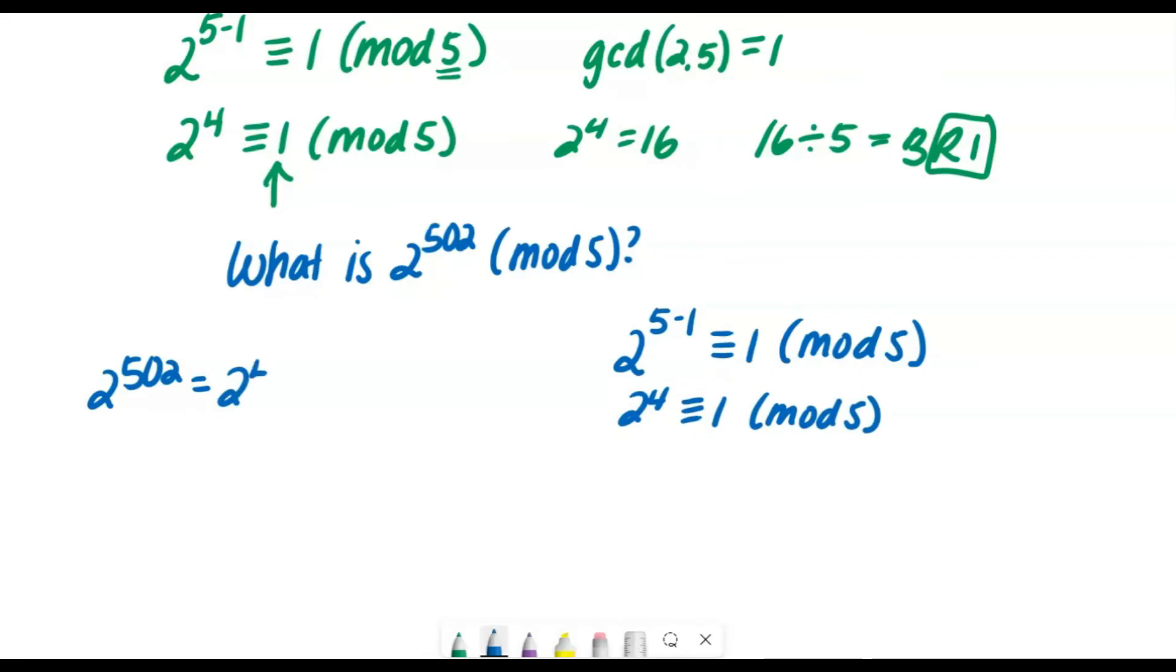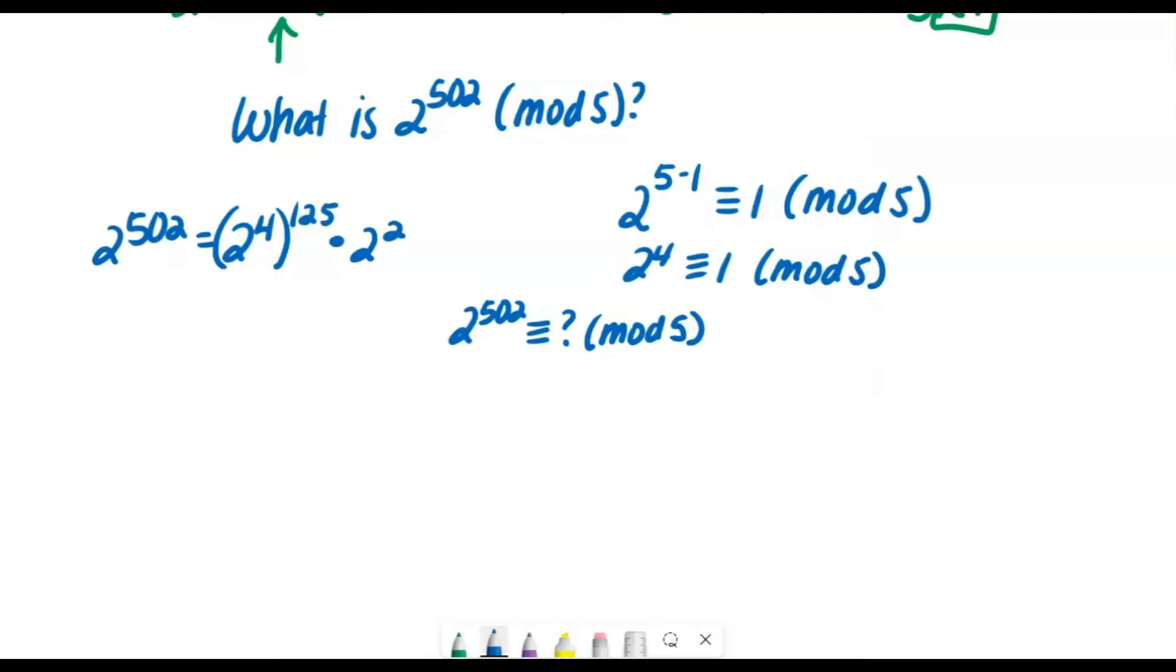So the first thing I would do is figure out, well, two to the fourth, four goes in to 500 into 125 times. That would be two to the power of 500. So then I would have two squared left over. So I'm going to come over here and write, then two to the power of 502 must be congruent to what in mod five? Two to the power of 502 is the same as two to the fourth to the power of 125 times two squared.